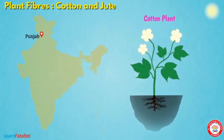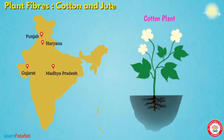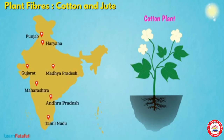We can see this cotton plant in Punjab, Haryana, Gujarat, Madhya Pradesh, Maharashtra, Tamil Nadu and Andhra Pradesh.